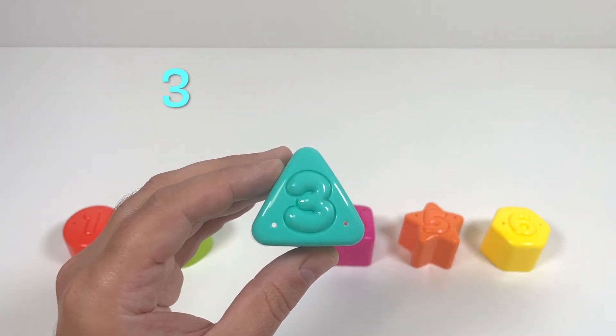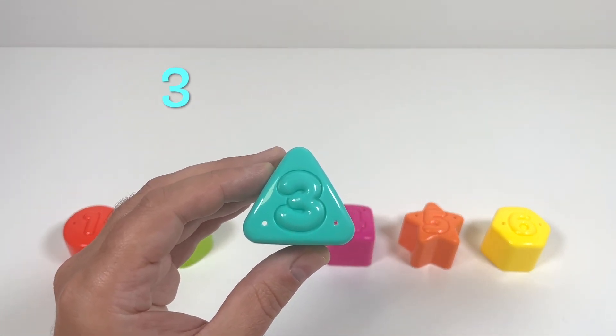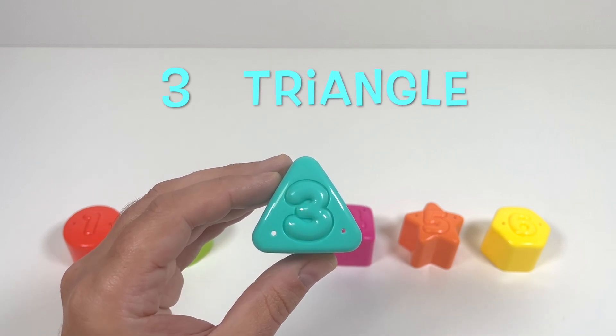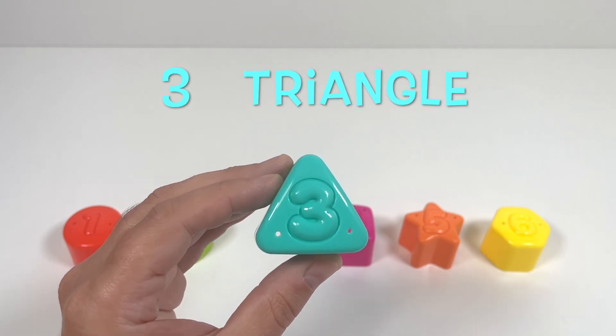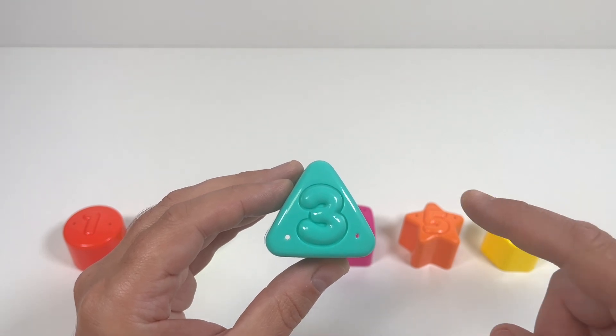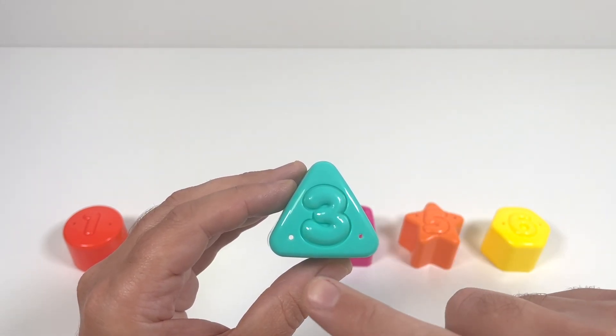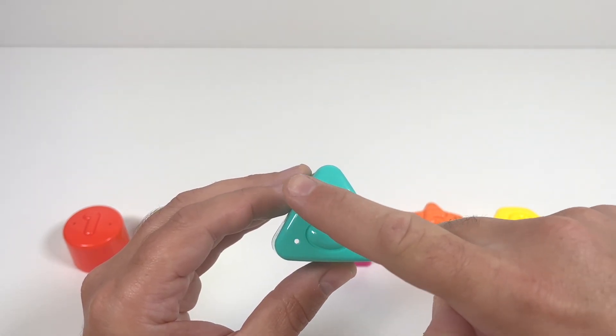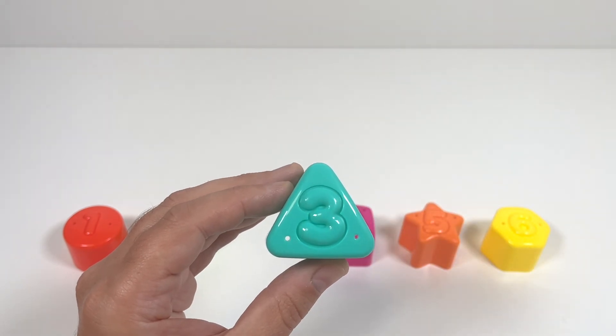Number 3 is a blue triangle. A triangle has three sides. Let's count them. 1, 2, 3. Yeah, it's a blue triangle.